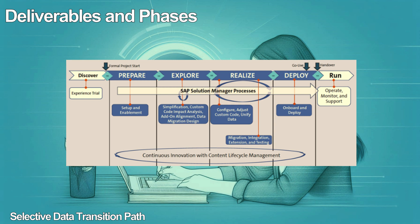In the realize phase, the team completes the implementation, tests the converted solution and data migration in the quality assurance (QA) environment, migrates the selective data, and creates the new production environment. Finally, in the deploy phase, the team rehearses the production conversion and carries out the production conversion, data migration, go-live, and hypercare. At the end of the deploy phase, the build team hands over the solution to the operate team to commence the run phase of the project.